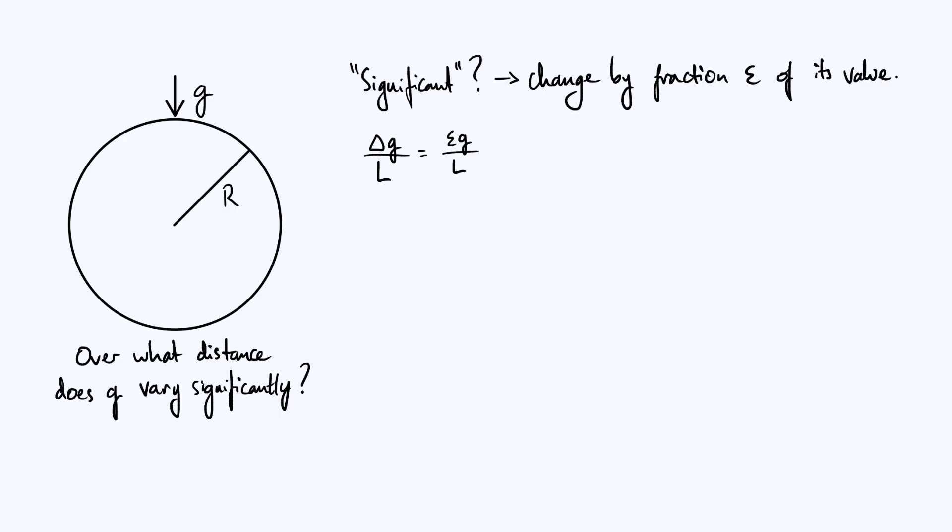Now this is useful because provided we take epsilon to be small, then epsilon g will also be a smaller quantity, and this will be a decent approximation to the actual rate of change of g with distance, which is the derivative dg by dr. And then we can of course just rearrange this to get the length scale L, which is what we're interested in. It's going to be epsilon g divided by that derivative dg by dr.